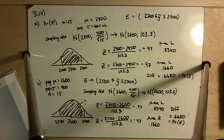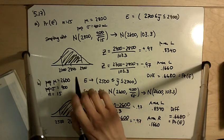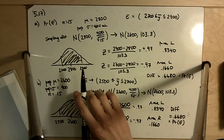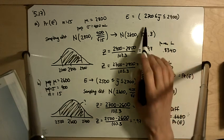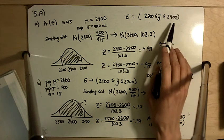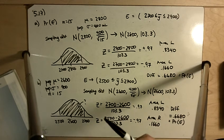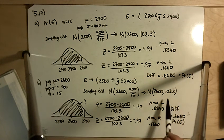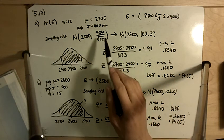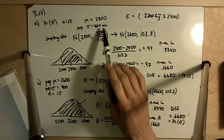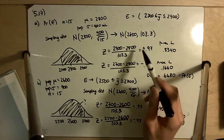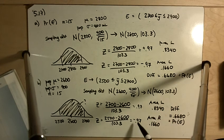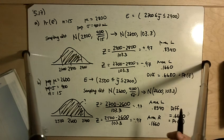Part C asks how much the probability of E depends on the population mean. The answer is: it does not depend on the population mean. All we are doing is shifting the center, but we also shift the range of E along with it — from 2700–2900, to 2500–2700, or in problem 516 from 2900–3100. The standard deviation of the sampling distribution is always 400 divided by the square root of 15, which equals 103.3, and N stays the same at 15. So the Z-values end up being the same in all cases, meaning the area and the probability remain the same.